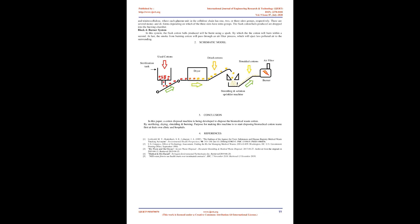It was also used to replace gunpowder as a low-order explosive in mining and other applications. Nitrocellulose products are generally a mixture of mononitrocellulose, dinitrocellulose, and trinitrocellulose, where each glucose unit in the cellulose chain has one, two, or three nitro groups, respectively. There are several mono and di forms depending on which of the three slots have nitro groups.